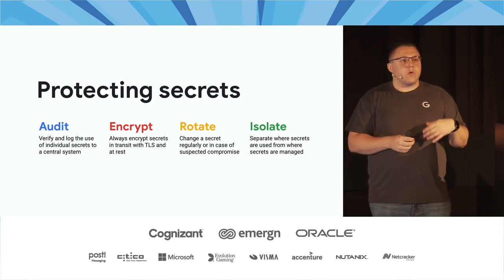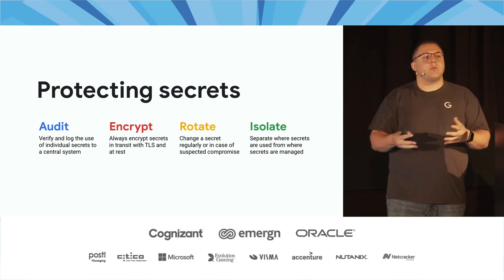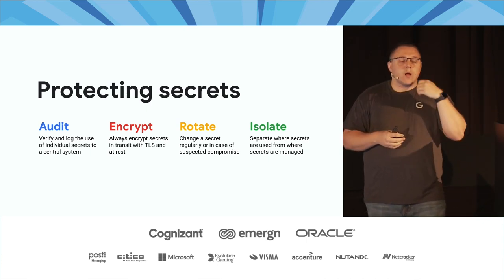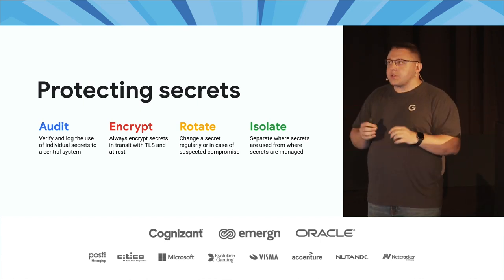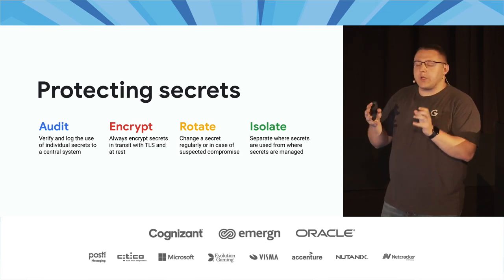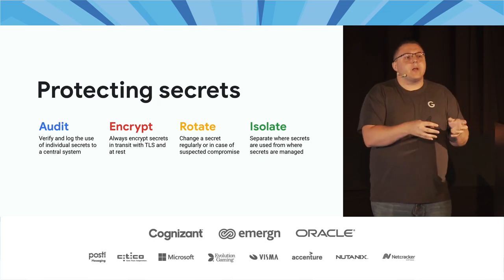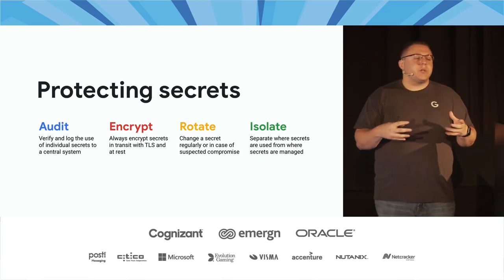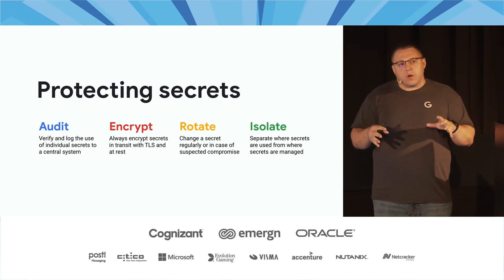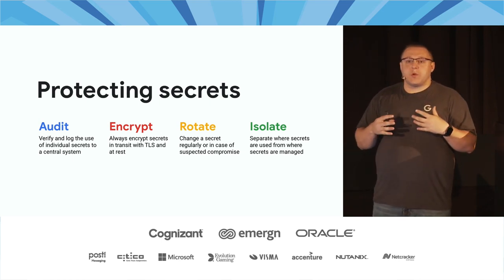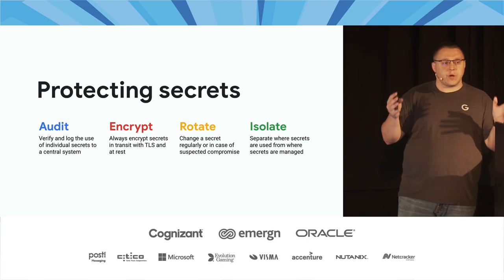This is great because if we only deploy our monolithic application every two to three months, we don't have to wait to rotate secrets. The fourth protection method, very closely coupled to encryption, is isolation. We need to separate where secrets are stored from where they're accessed, so attackers need to compromise multiple systems in order to escalate privilege. These are the most common ways to protect secrets in a distributed system or microservices architecture.